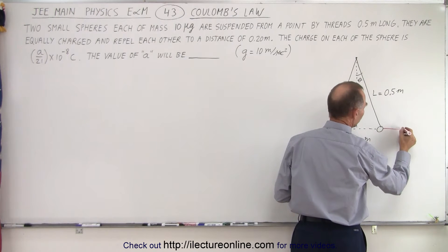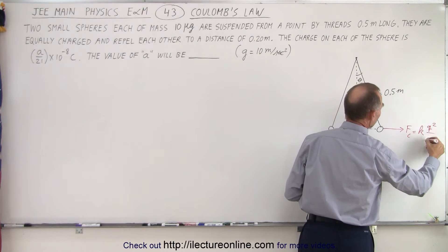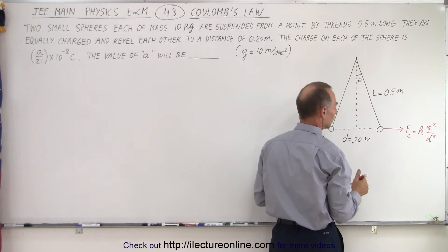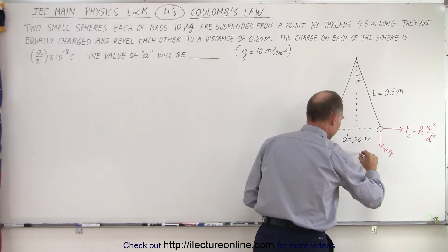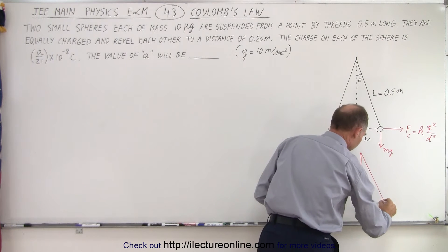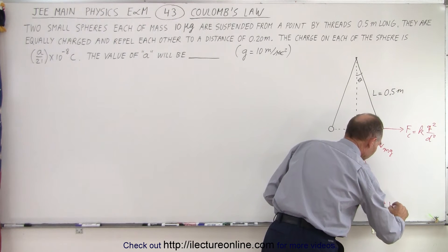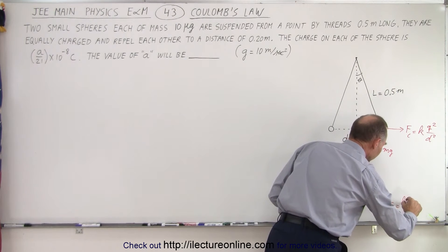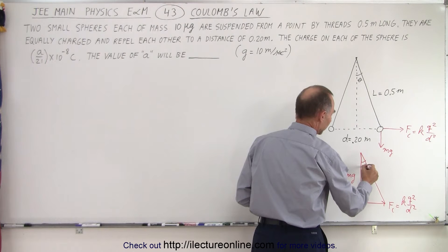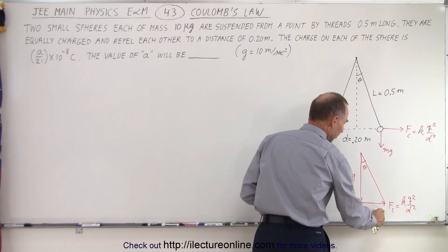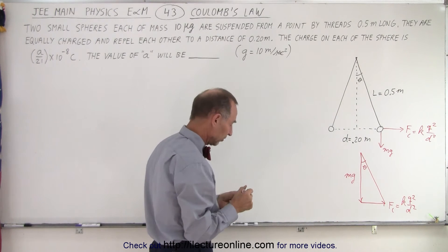Notice we have the Coulomb force right here, which is equal to K Q squared over the distance squared, the distance being 20 centimeters. And then we have the Mg pulling down, and then we can use that in order to draw a similar triangle using vectors. This here represents Mg, this here represents the Coulomb force. Notice that this is the same angle theta, and then we can see there's a relationship between the opposite side and the adjacent side, and we can use that for the tangent of theta.